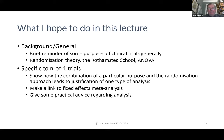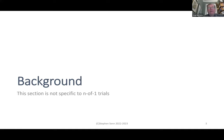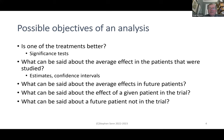What I hope to do in this lecture is give you a reminder of some purposes of clinical trials — what we finished with last lecture — discuss the randomization theory, the Rothamsted School approach and analysis of variance, and then specifically for end-of-one trials show how these guide how we should do analysis. Here are some particular questions: Is one of the treatments better? What can be said about the average effect in the patients studied? What can be said about the average effect in future patients? What can be said about the effect of a given patient in the trial? And about a future patient not in the trial? These are all different questions requiring different analyses.